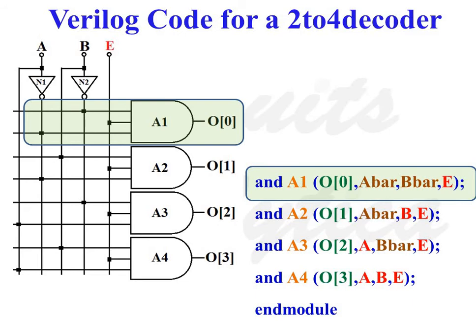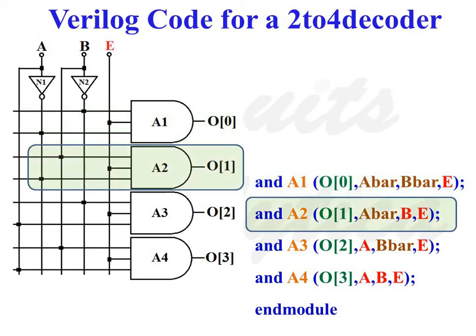The line 'not N2 (B_bar, B);' specifies a NOT gate labeled N2 whose output is connected to wire B_bar and whose input is connected to input line B. The line 'and A1 (O0, A_bar, B_bar, E);' specifies that an AND gate labeled A1 is instantiated, whose output is connected to output port O0 and whose three inputs are connected to wire A_bar, wire B_bar, and input port E. The line 'and A2 (O1, A_bar, B, E);' instantiates an AND gate labeled A2 whose output is connected to O1, with inputs connected to wire A_bar, input line B, and input port E.